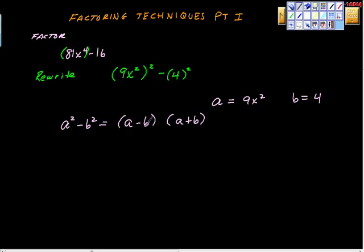We've worked on this a lot. I think that we're confident that this is true, so we don't have to assume this. We've proven this many, many times. So all we're going to do is rebuild this thing, and we're going to say a is 9x squared. So we have 9x squared minus 4 times 9x squared plus 4.